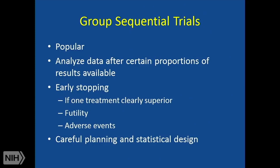One that you do see commonly in clinical research is group sequential trials. Type one error can be easily computed here — you can't do that easily in straight sequential trials. These are very popular because you analyze your data after a certain proportion of the results or information from the trial is available. There's early stopping depending on how you set this up: if one treatment arm is clearly superior, if there's futility — meaning you're still not going to have statistically significant results at the end — or you may stop for adverse events. All trials should be monitored to see if they need to be stopped.